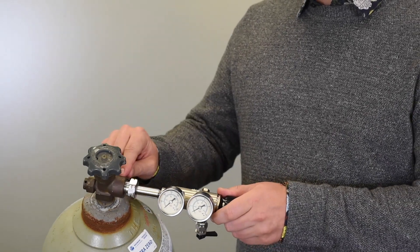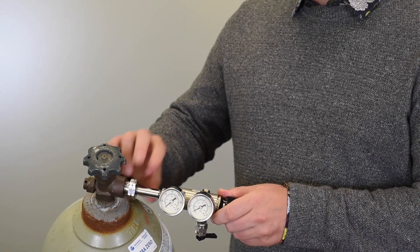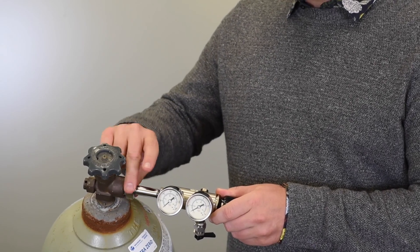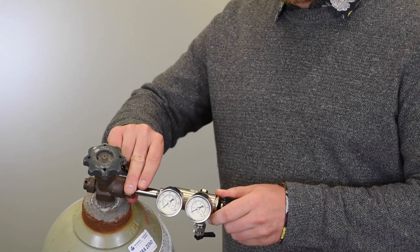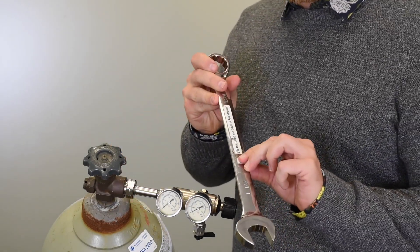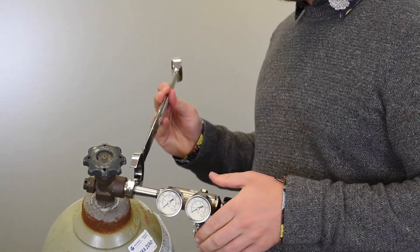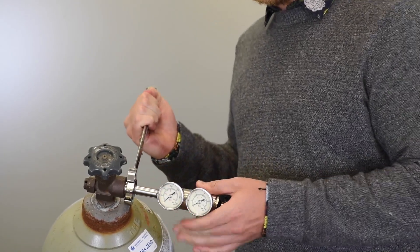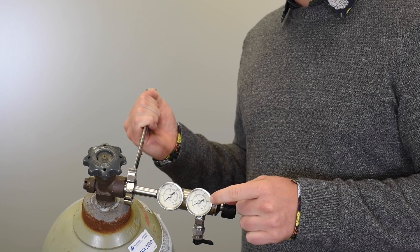Place the regulator into the cylinder. Remember this is a 590 so it's a reverse thread. Tighten it until it's finger tight. Then take a one and an eighth inch wrench and finalize it, tightening reasonably tight and making sure the gauges are oriented so you can read them.